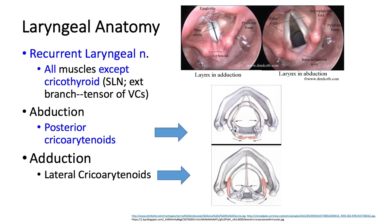Adduction is performed by the lateral cricoarytenoids. When those lateral muscles pull and rotate the cartilages, it pulls the vocal cords medially — adducted — so they are closed.